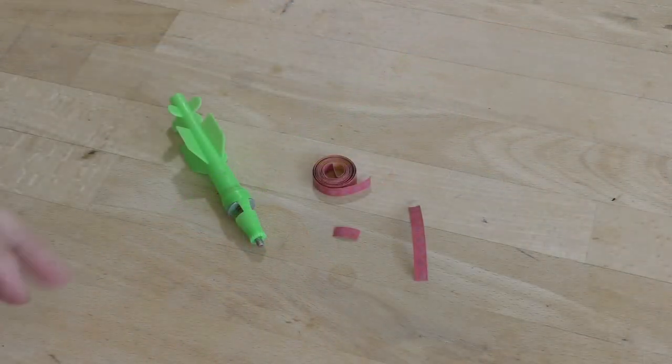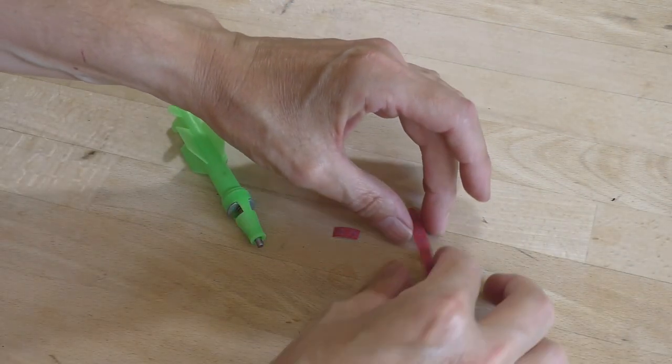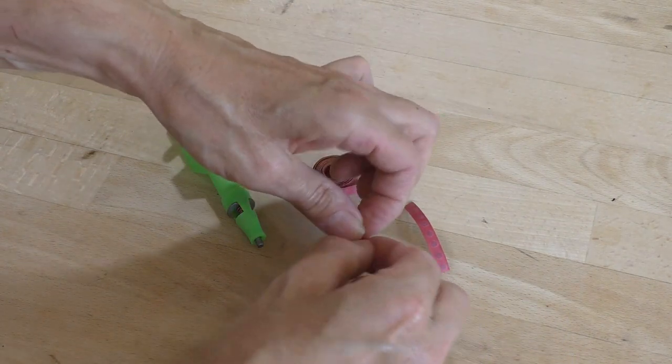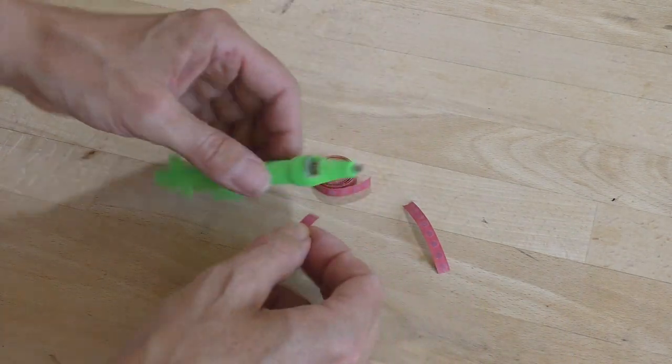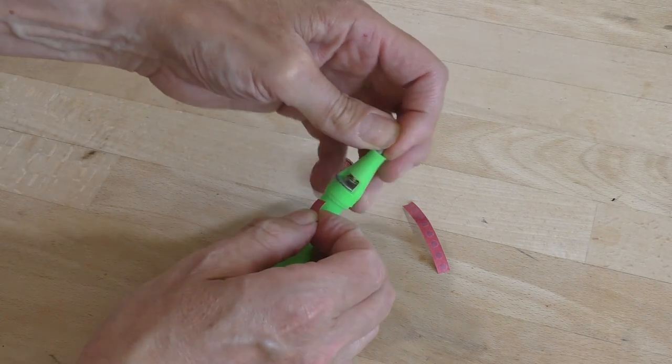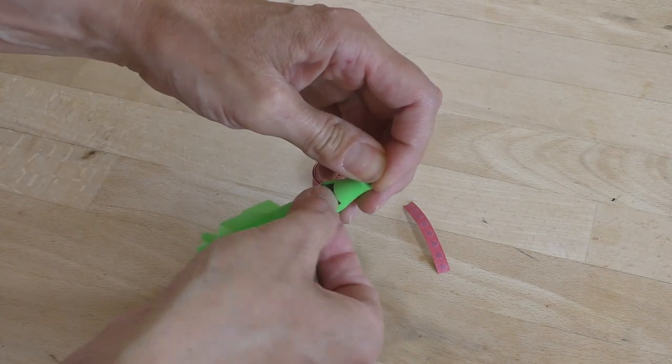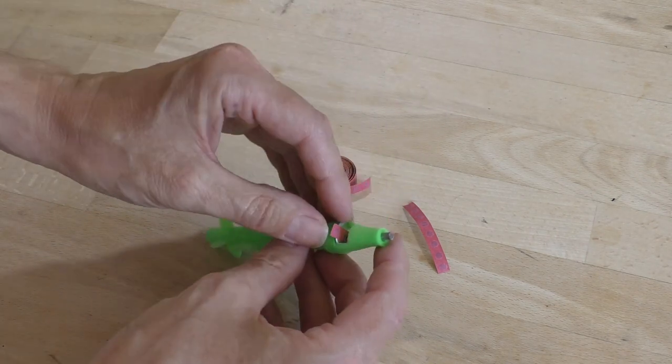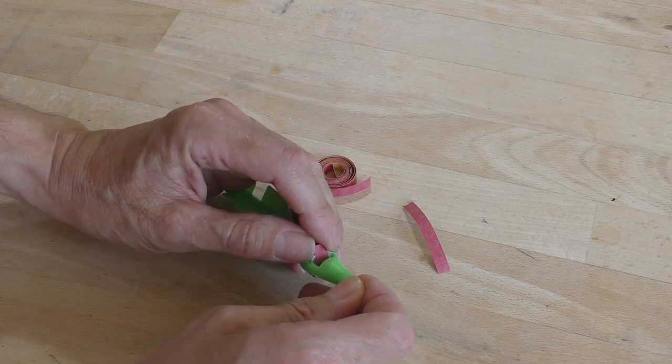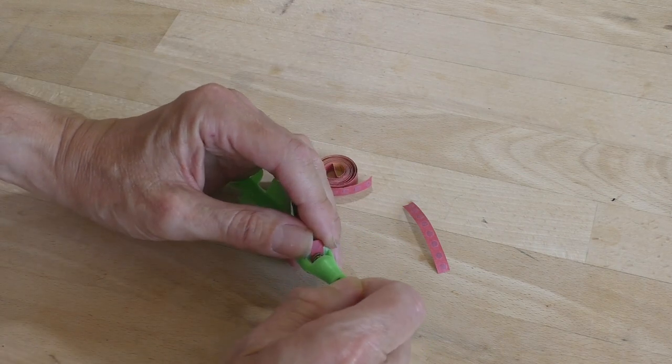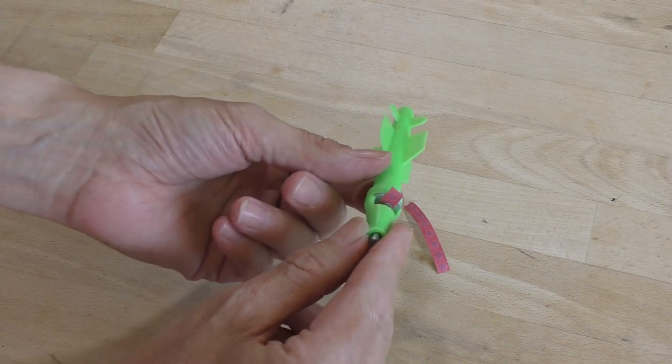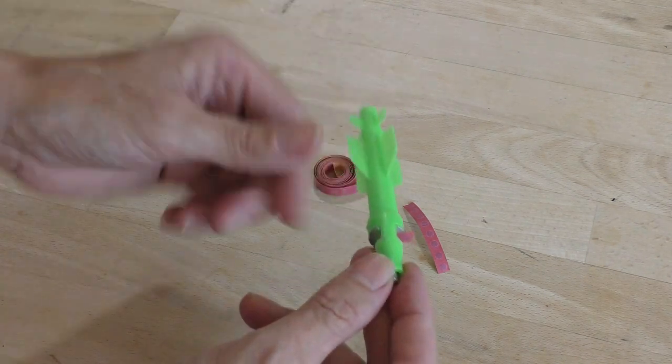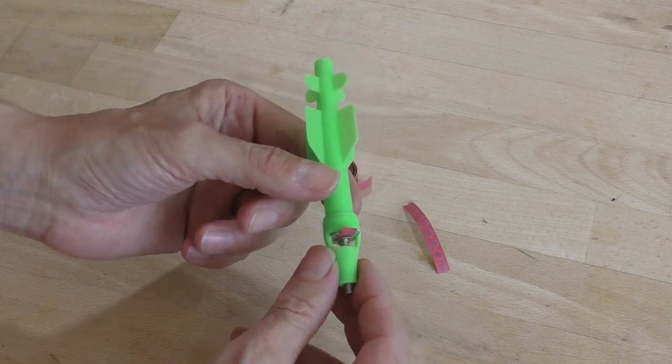Right, what I've done is just cut some of these off the reel. I think we'll use two. Simply, you just slide one of these under the plunger, line it up with the head of the cap, just like that, and that's ready to go.